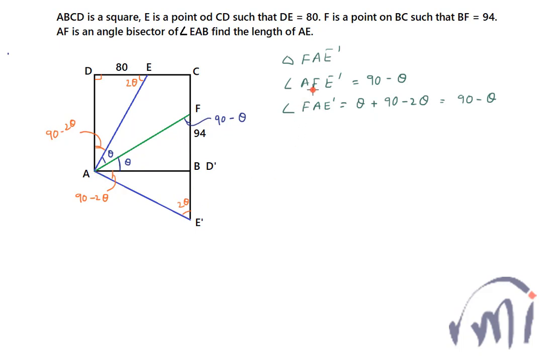So in triangle AFE'D' angle AFE'D' that is this angle and angle FAE'D' that is this total angle, both of them are equal to 90 minus theta. So triangle, yes, FAE'D' is actually an isosceles triangle.